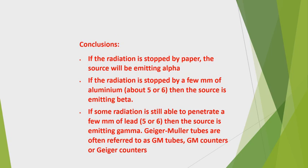Identifying radiation types using absorbers: if radiation is stopped by paper, the source is emitting alpha particles. We use three absorbers — first paper (alpha), then a few millimeters of aluminum (if stopped: beta particles), then a thick block of lead (if stopped: gamma particles). Geiger-Müller tubes — also called GM tubes, GM counters, or Geiger counters — are used to detect radiation.